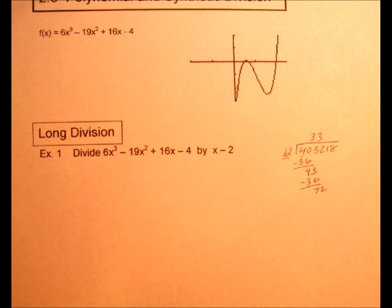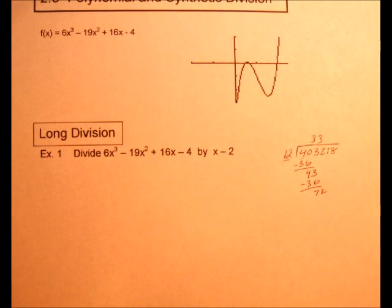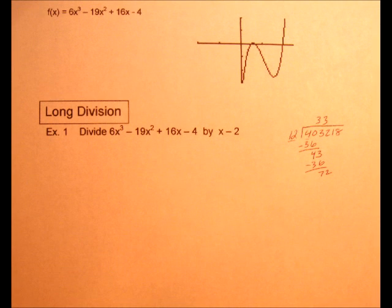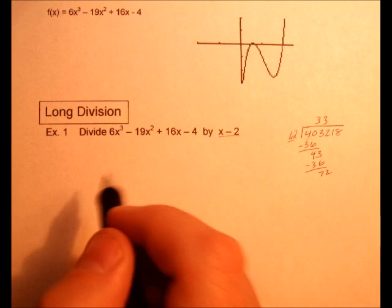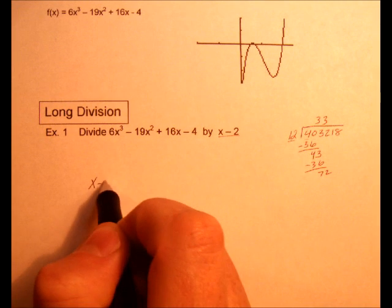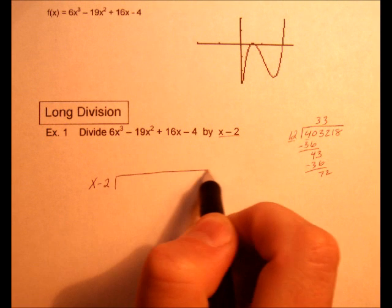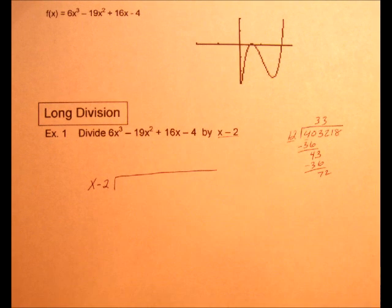Okay, so we're going to do this exact same thing with our functions here. So we're going to divide by x-2. It's called the divisor by the way. Dividend, divisor, and the answer's the quotient.